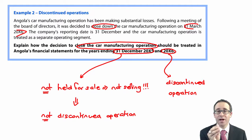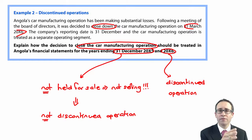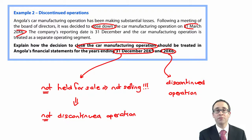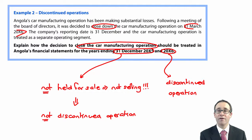The key to determining the earliest possible disclosure is whether the operation is held for sale. If you are selling it, look at the held for sale criteria; if you're not selling it, it is not a discontinued operation because it is not held for sale. Have a go at a couple of questions in the revision kit of the tuition provider of your choice. The difficulties here are fewer than with non-current assets held for sale, which is the first part of IFRS 5.